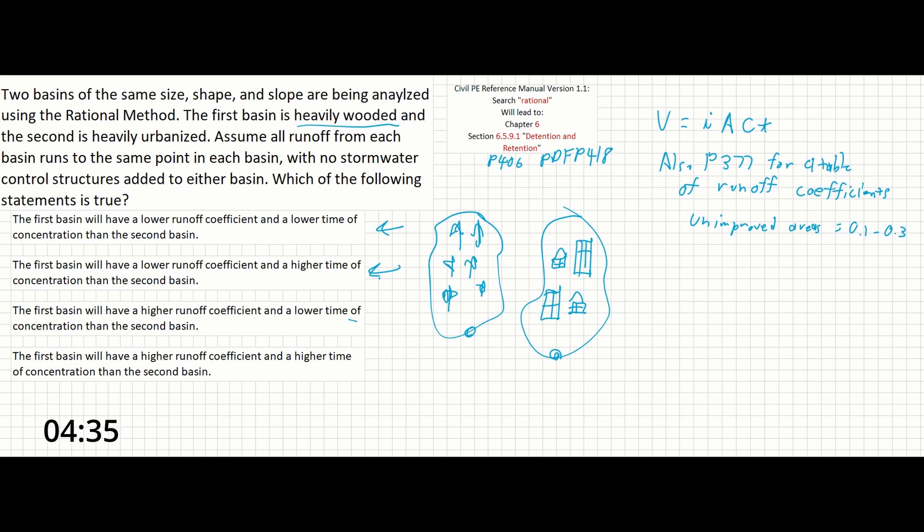And now we have to ask about the time of concentration. The time of concentration is based on the speed at which it takes the flow from the farthest point to start contributing to the flow at the outlet where it's being measured. In a heavily wooded area the water is going to move a lot slower than in a heavily urbanized area where the water is going to runoff, not infiltrate at all, and generally move at a higher velocity with way less lag time.